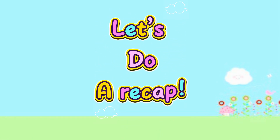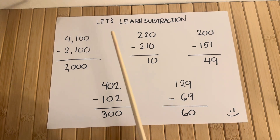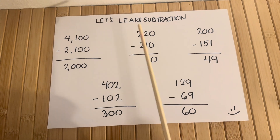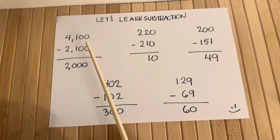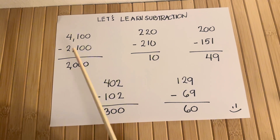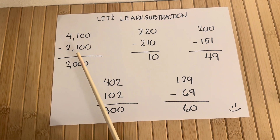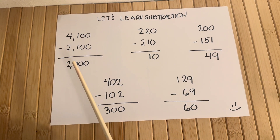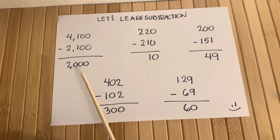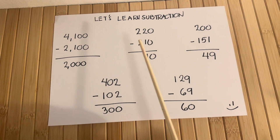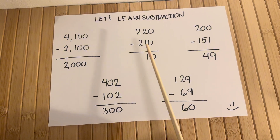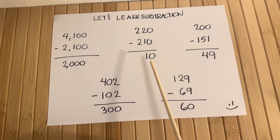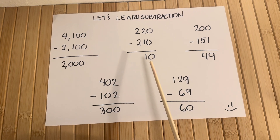Let's do a recap. Let's learn subtraction. Four thousand one hundred minus two thousand one hundred is equals to two thousand. Two hundred twenty minus two hundred ten is equals to ten.